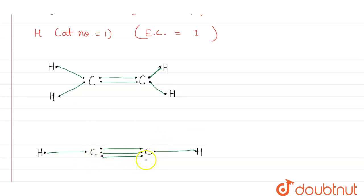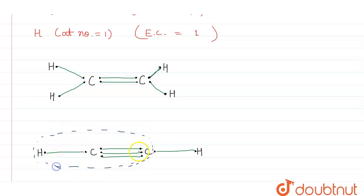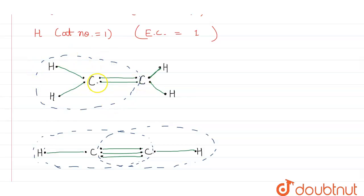This is how the sharing of electrons between carbon and hydrogen takes place. We can verify that each carbon atom has a total of eight electrons, satisfying the octet rule. Similarly, in C₂H₂, each carbon also has eight electrons. This is how in carbon compounds, sharing of electrons takes place and carbon becomes stable by completing its octet.